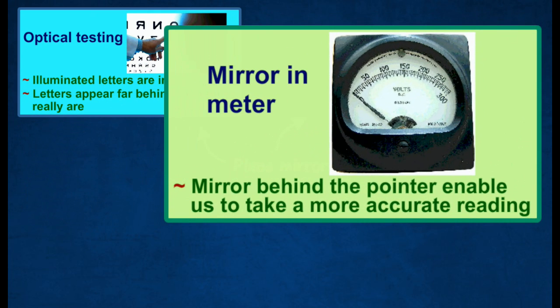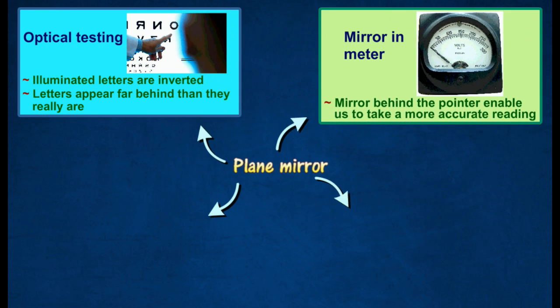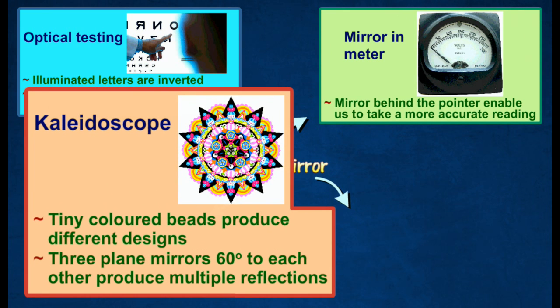To overcome parallax errors, a mirror behind the pointer enables us to take a more accurate reading.